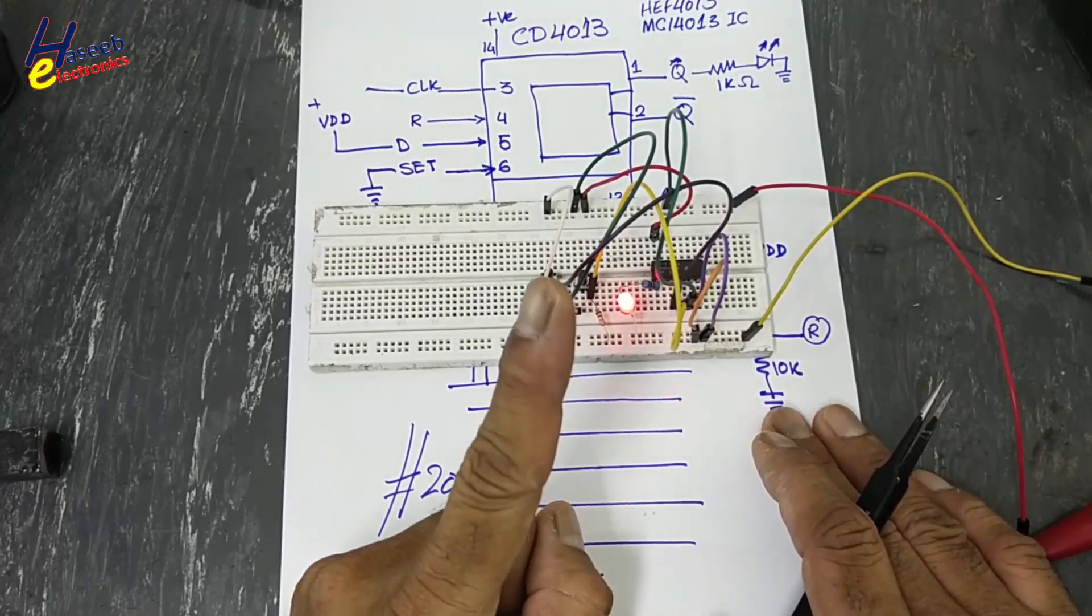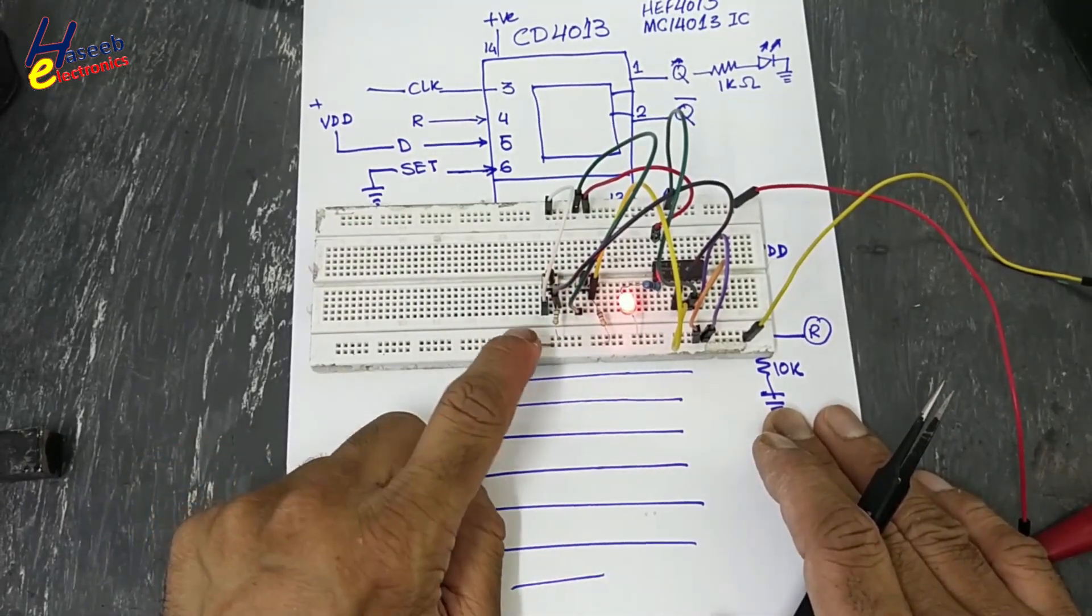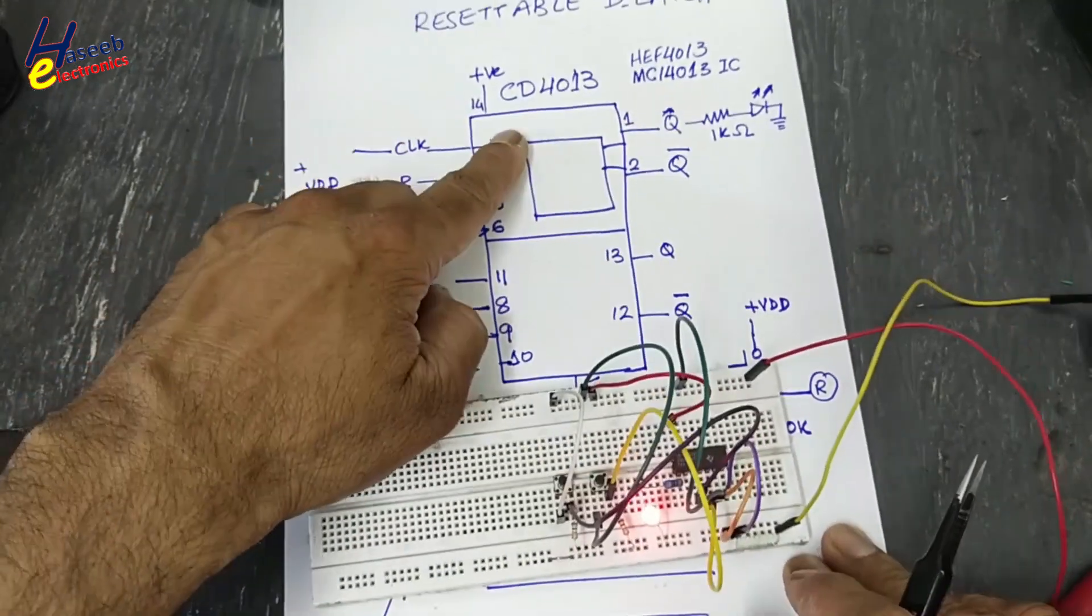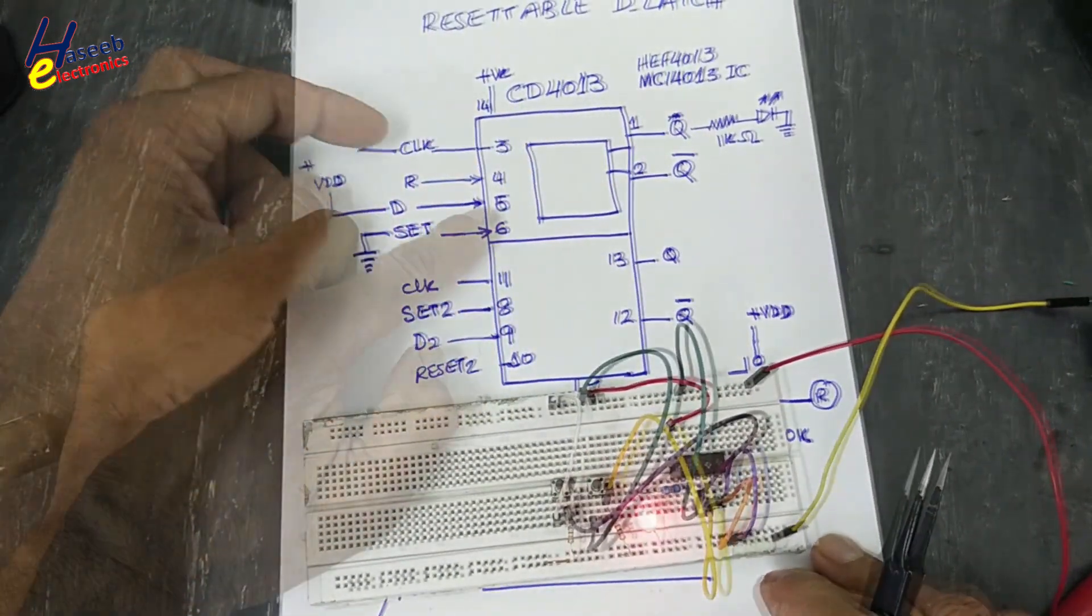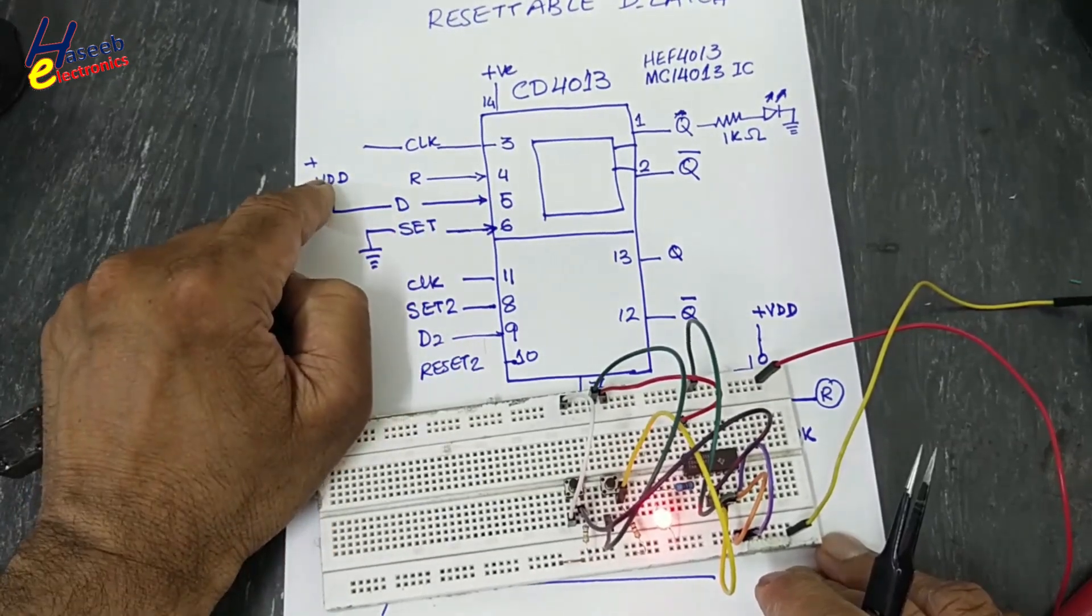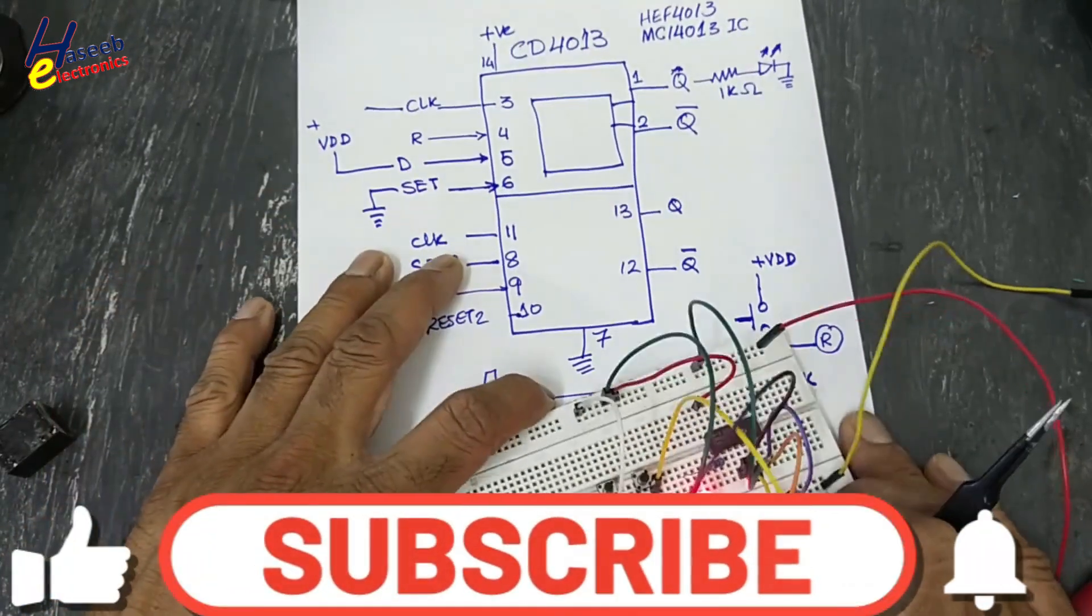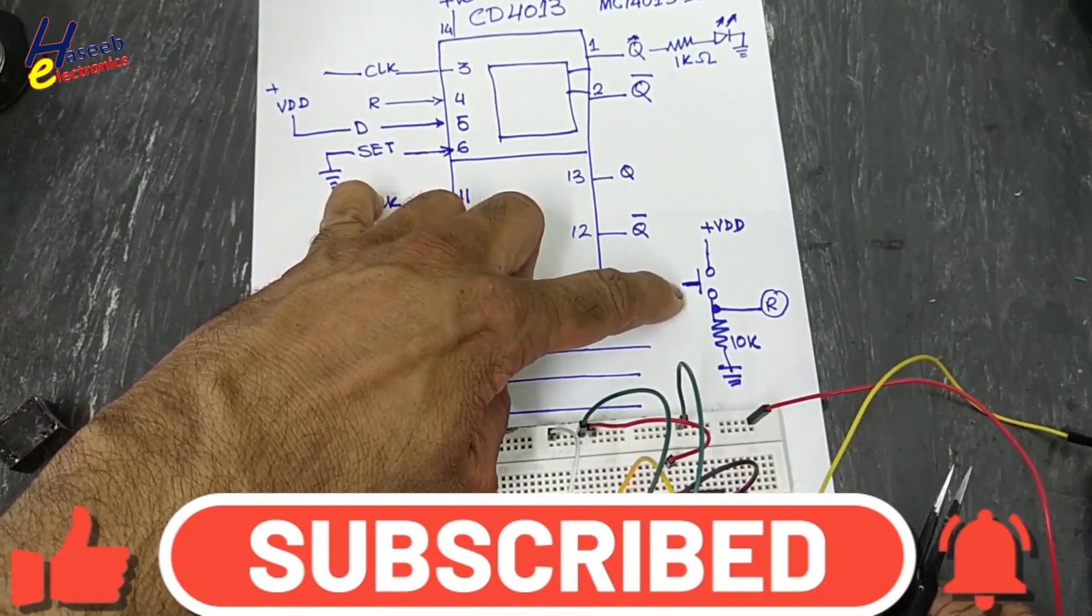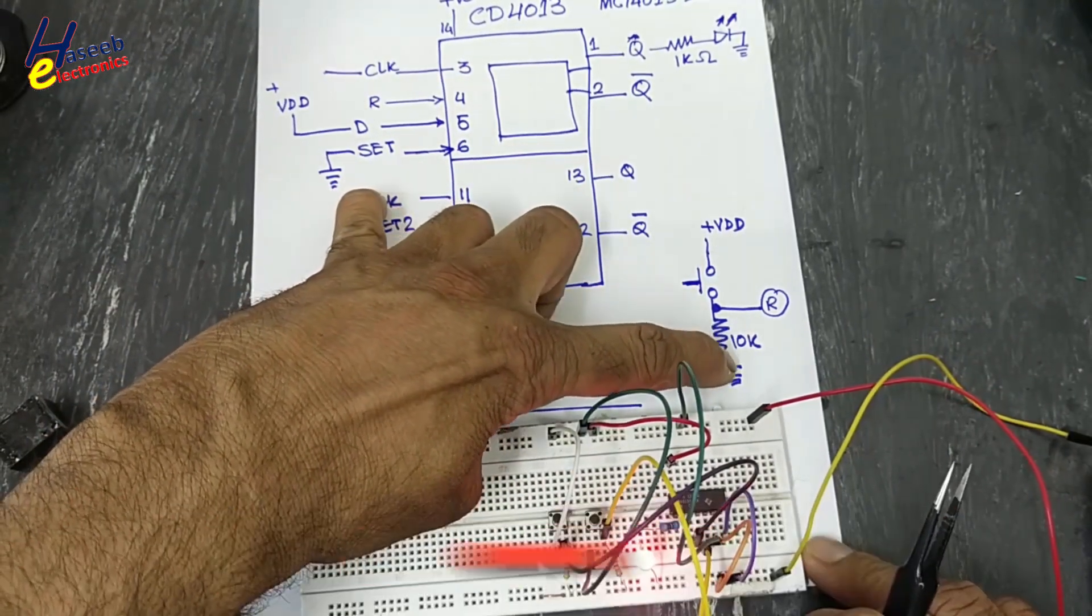I used CD4013 IC. I connected D pin, pin number 5, to VDD. The reset pin we connected using a reset switch with a 10k resistor grounded, and this point to the reset pin. Same configuration we used to generate the clock signal.